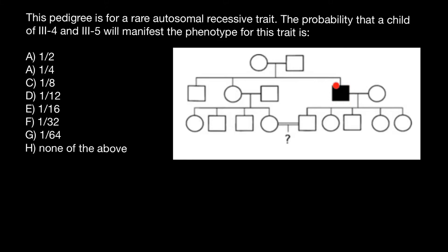Because this affected person has parents who are unaffected, we can confirm this is an autosomal recessive trait. The genotype of the parents is going to be capital A small a and capital A small a — they are heterozygous and phenotypically normal. The genotype of this affected person is going to be small a small a.